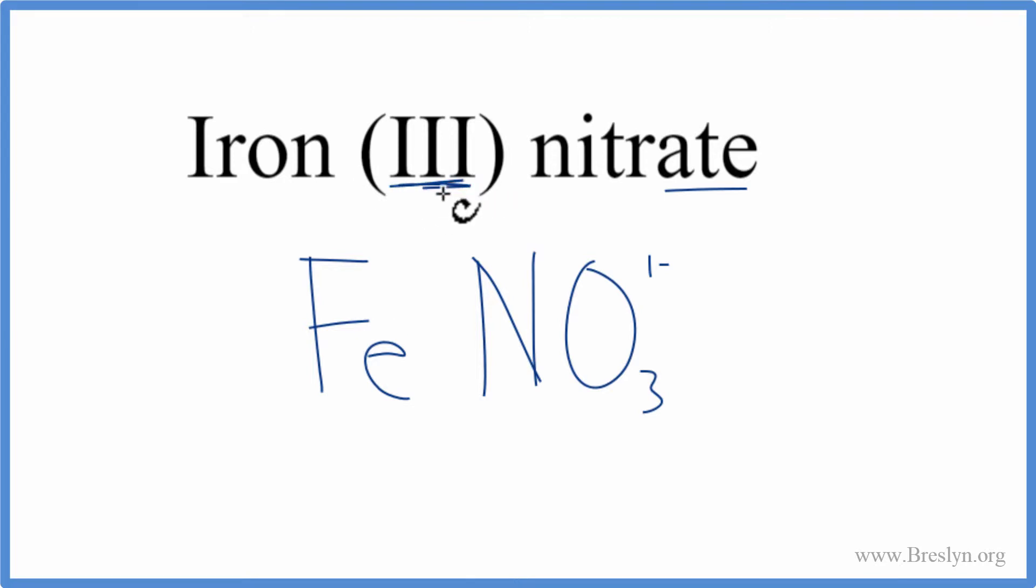Iron tells us right here, iron three. That three means iron has a plus three charge, and we know the nitrate has a 1- charge. So these charges need to add up to zero for this to be a neutral compound. Iron three nitrate, that's a neutral compound.